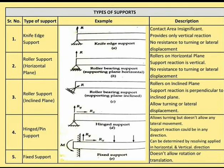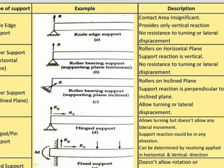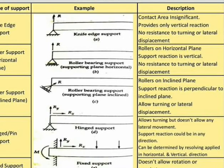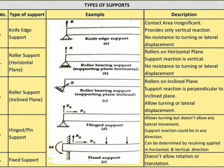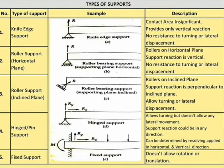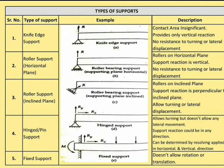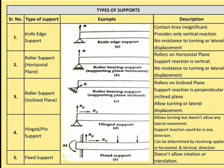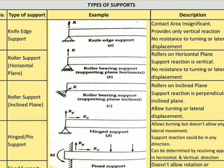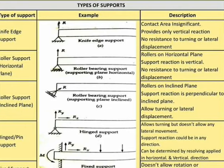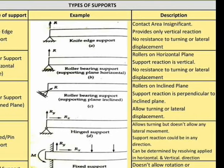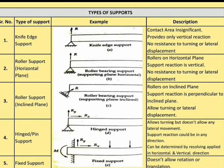Next we are going to see various types of supports. The first is the knife edge support, shown in figure a. It has a very small contact area, provides only a vertical reaction, and offers no resistance to turning or lateral displacement. The second is a roller support on a horizontal plane — the reaction is vertical, with no resistance to turning or lateral displacement.